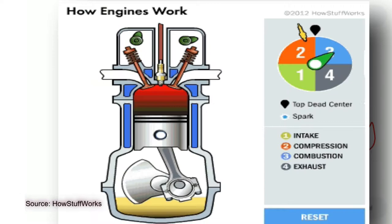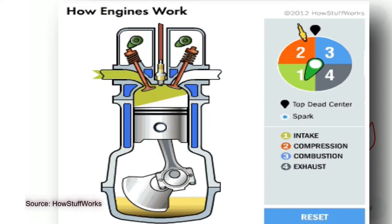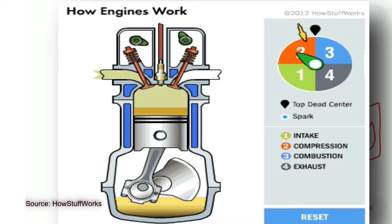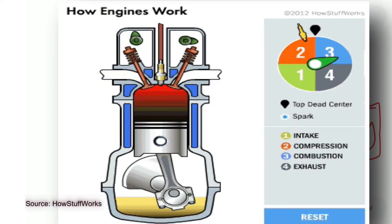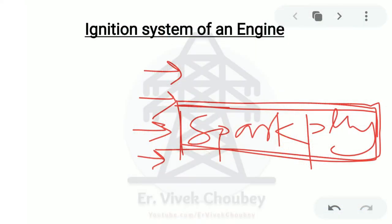We are not going to discuss the engine in detail — we are mostly interested in how the spark plug works. The spark plug generates the spark, and the system which helps in generating this spark is known as the ignition system. As you can understand by the word ignition, it helps in igniting the air-fuel mixture within the engine.